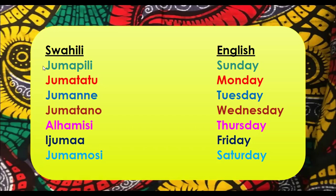We'll read through first for you to hear how it sounds. You can repeat with me: Jumapili — Jumapili. Jumatatu — Jumatatu. Jumanne — Jumanne. Jumatano — Jumatano. Alhamisi — Alhamisi. Ijuma — Ijuma. Jumamosi — Jumamosi. So: Jumapili is Sunday, Jumatatu is Monday, Jumanne is Tuesday, Jumatano is Wednesday, Alhamisi is Thursday, Ijuma is Friday, Jumamosi is Saturday.